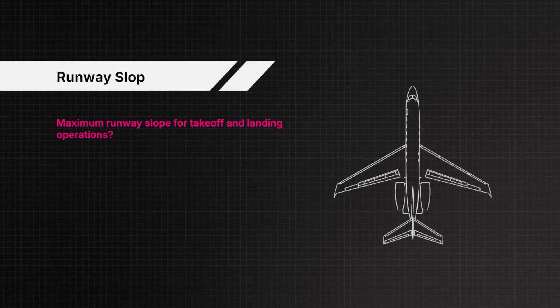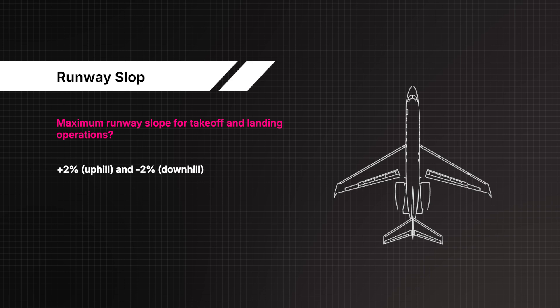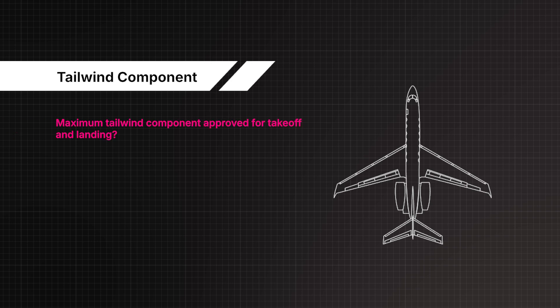Maximum runway slope for take-off and landing operations: plus 2% uphill and minus 2% downhill. Maximum tailwind component approved for take-off and landing: 10 knots.